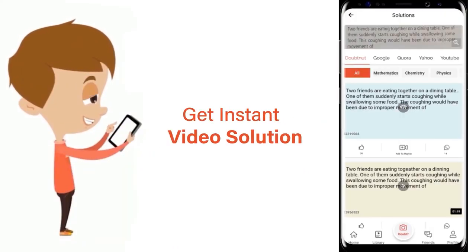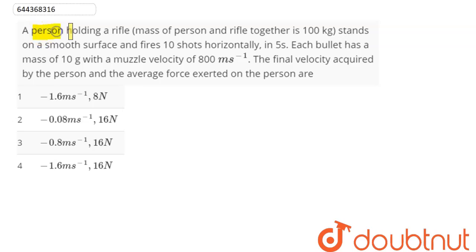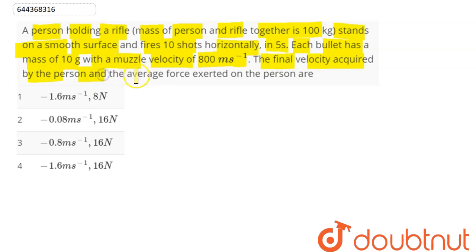A person holding a rifle — mass of person and rifle together is 100 kg — stands on a smooth surface and fires 10 shots horizontally in 5 seconds. Each bullet has a mass of 10 gram with a muzzle velocity of 800 meter per second. We need to find the final velocity acquired by the person and the average force exerted on the person.